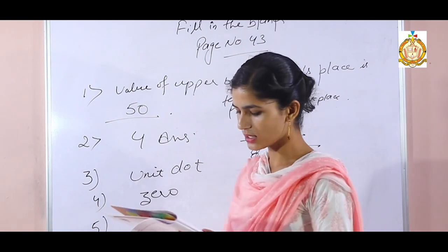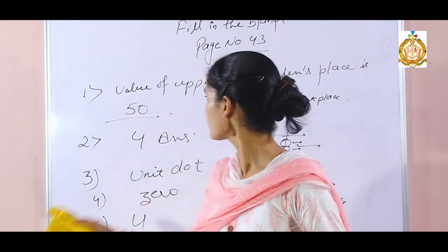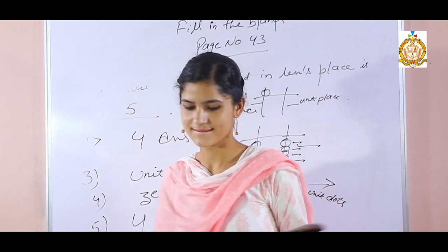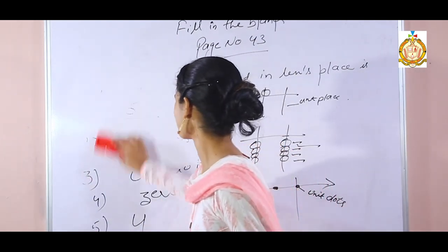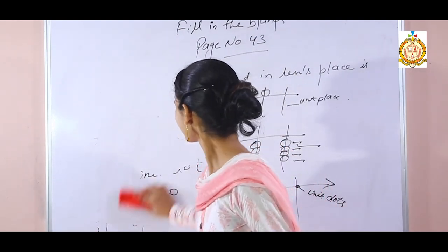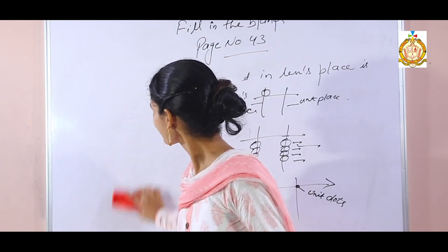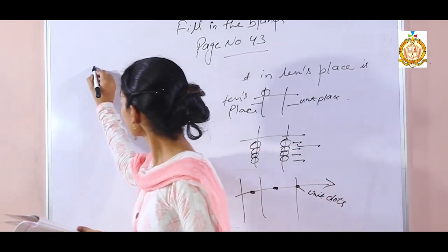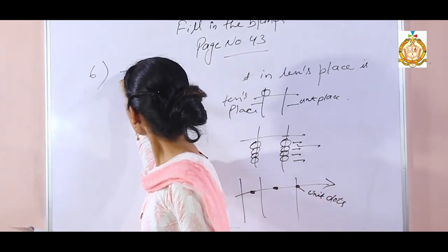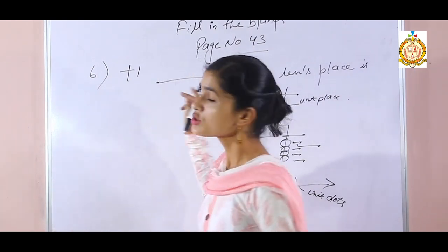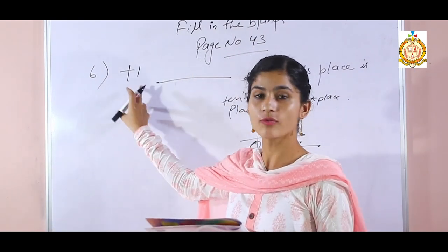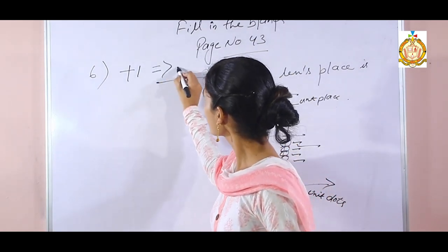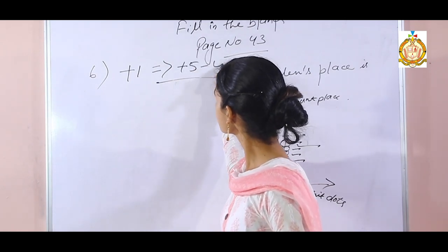Sixth fill-in: plus 1 is equal to dash — we have to write the formula. For plus 1, the formula is: add your common friend minus your best friend.